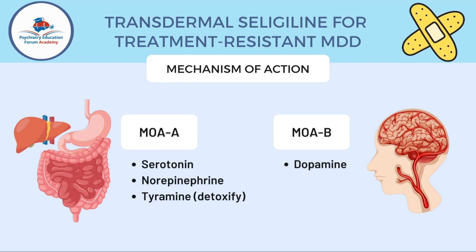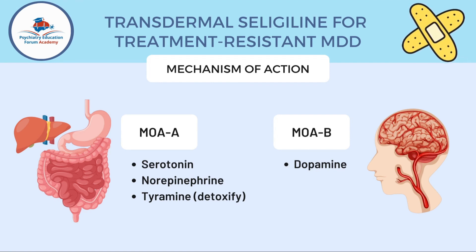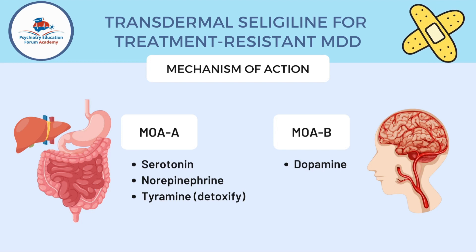Monoamine oxidase B mainly degrades dopamine. So these are the selectivities — be mindful of which enzyme is focused on the gut and liver, and which is focused on the brain. This will help us understand the side effect profile as well.